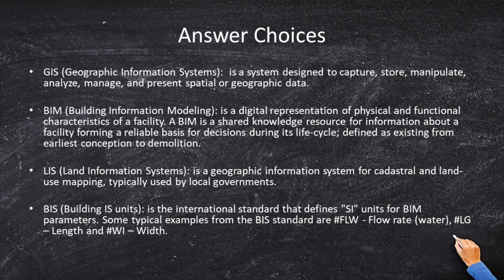LIS — Land Information Systems — is a geographic information system for cadastral or land use mapping, typically used by local governments. That doesn't sound very promising, so I'm going to cross off LIS. Finally, BIS — Building SI Units — is the international standard that defines SI units, basically covering inches, feet, cubic feet per second, and similar measures of length, width, and area. It's a unit of measure based on the SI or US format. That's not going to help much here.